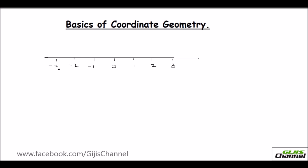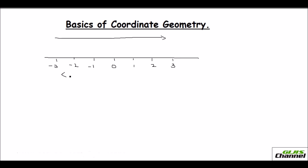In a number line, the value of numbers increases as you go from left to right. Negative 3 is always less than negative 2, negative 2 is less than negative 1, negative 1 is less than 0, and 0 is less than 1, and likewise it goes.